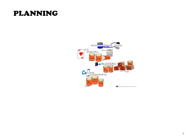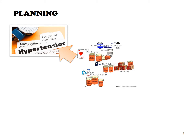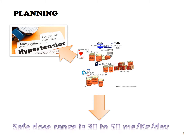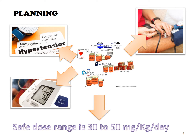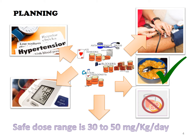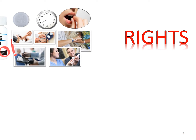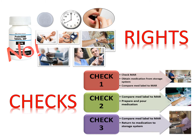The nurse must know the reason the patient has been prescribed a particular medication, the usual dose range, the expected outcome, which assessments must be completed before giving the medication, and how the medication should or should not be taken. The nurse adheres to the ten rights of medication administration and completes three checks.